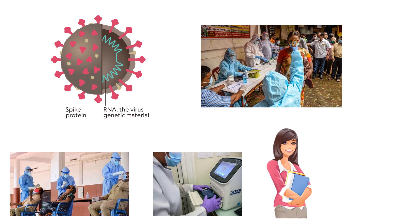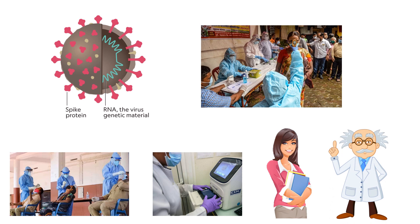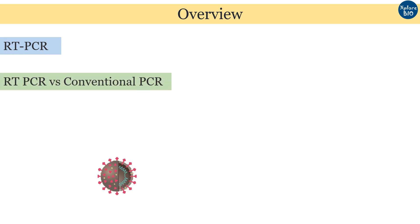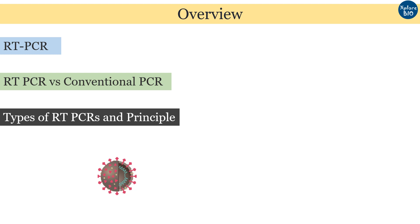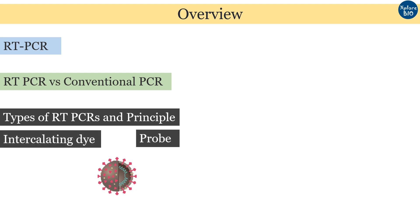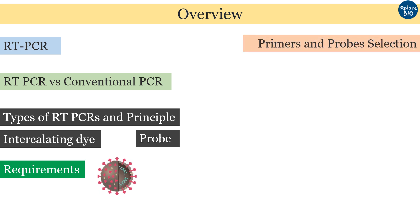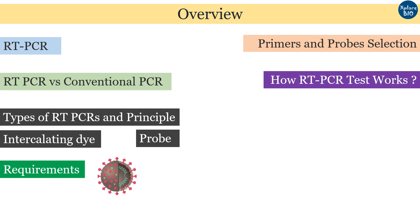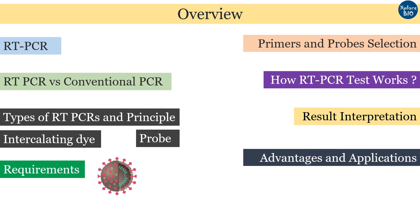If you are a college student or a researcher, you should definitely not miss this video because I have tried to cover as much information regarding RT-PCR as possible based on available resources and my personal experience. In this video, you will learn what RT-PCR is, how it is different from conventional PCR, two popular types — intercalating dye-based and probe-based — and their working principles, requirements for performing RT-PCR, how probes and primers are designed using COVID-19 as an example, how the RT-PCR test actually works, interpretation of results, and major advantages and applications of RT-PCR.